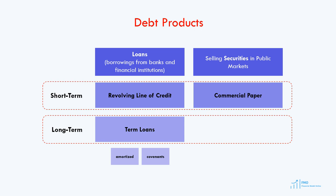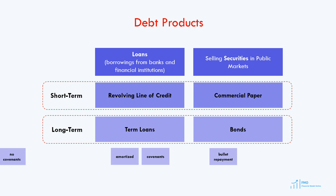Long-term securities that companies sell to the public are called bonds. In contrast to term loans, bonds are typically repaid at the end of the bond's life — this is called a bullet repayment profile. In addition, bonds do not carry restrictive covenants, so the management of a company that issues bonds may retain its flexibility when it comes to the company's operations.